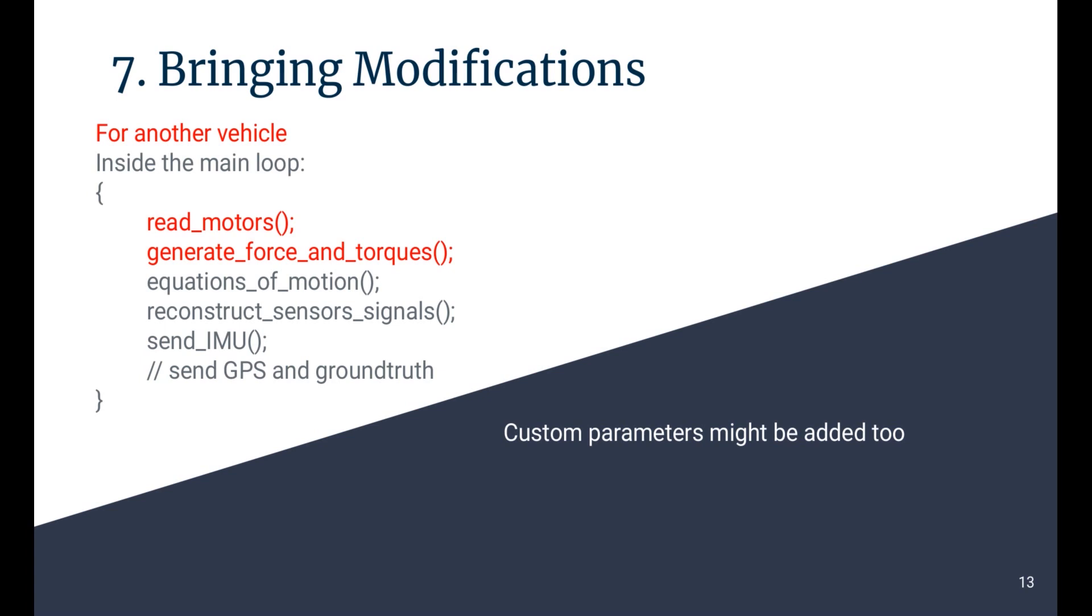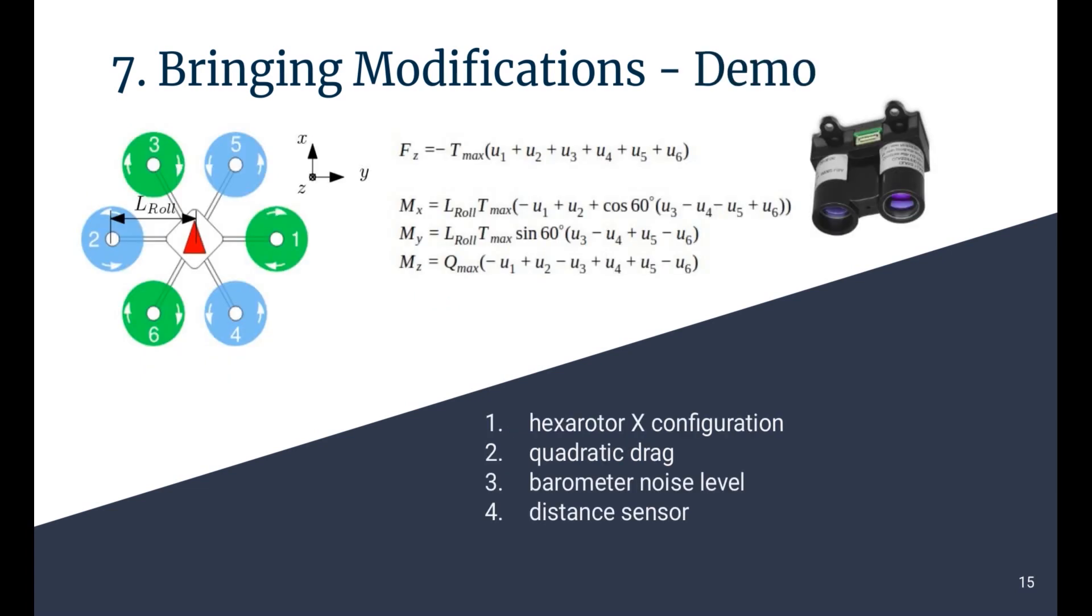If a developer or a researcher wants to modify the SIH for a custom vehicle, the only modifications will be in reading the motors and generating the forces and torques. Additionally, custom parameters might be added too. To modify the sensor's noise level to better represent sensor noise logged from a real flight, for instance, the reconstruction of the sensor's signals can be modified easily. Adding a custom sensor can be done in the function reconstructing the sensor's signals. The custom sensor must then be published to UORB.